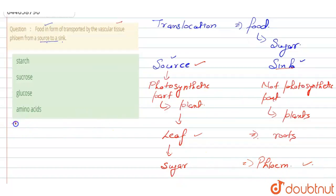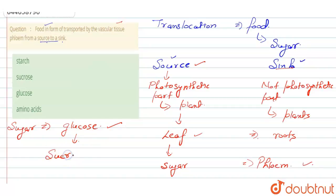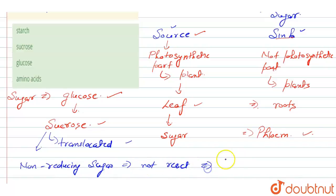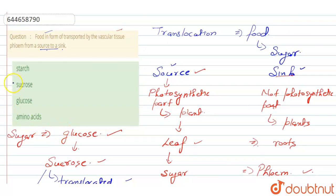The sugar prepared by the source is formed in the form of glucose, and this glucose is then converted into sucrose. This sucrose is then translocated by the vascular tissue. Why is sucrose translocated rather than glucose? Because sucrose is a non-reducing sugar, meaning it does not react with other substances. So the right answer for our question is sucrose.